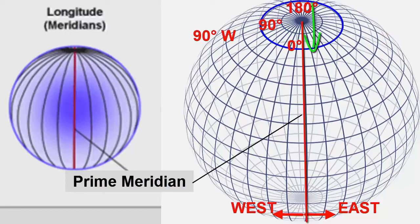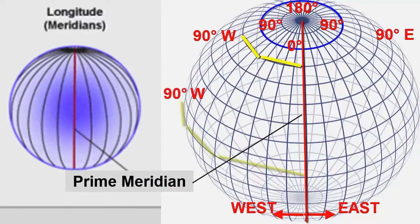If we travel three-quarters of the way, it's the same as traveling one-quarter east or 90 degrees east. If we travel all the way to the opposite side, we're at 180 degrees east or west.